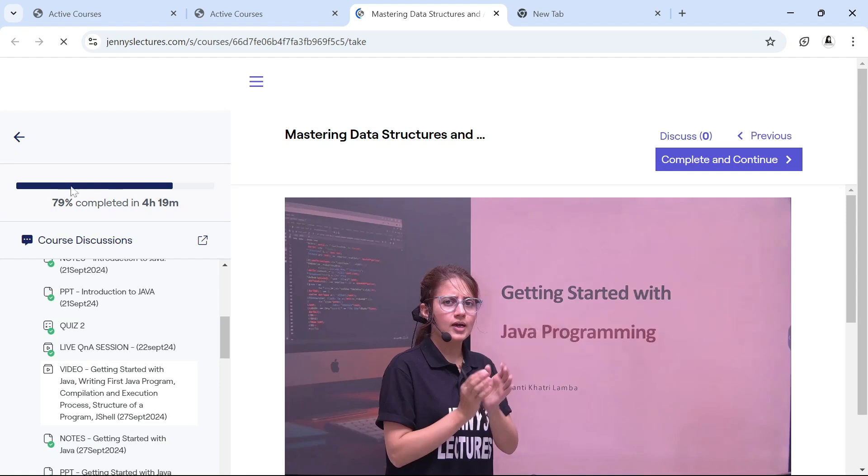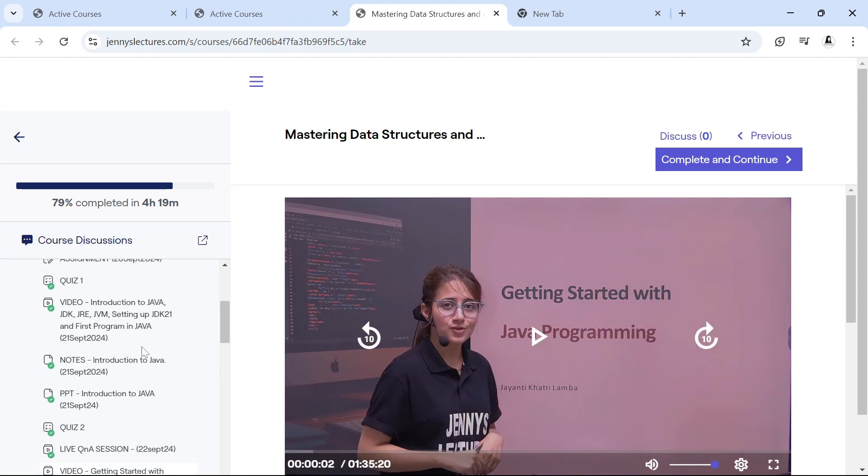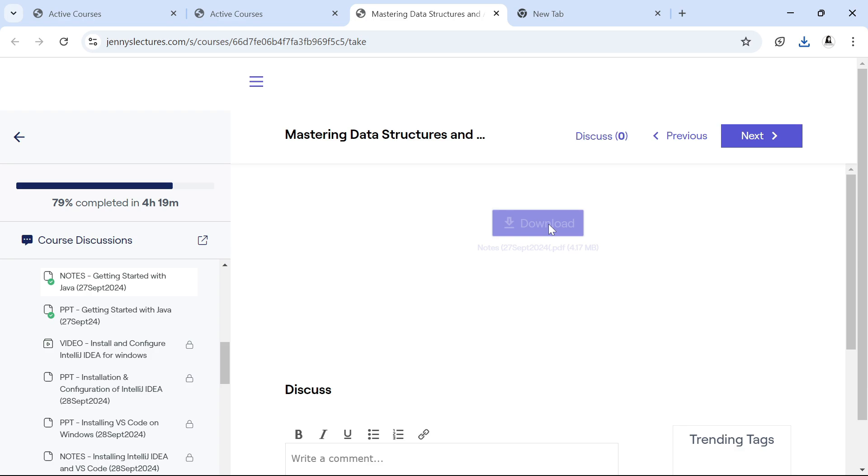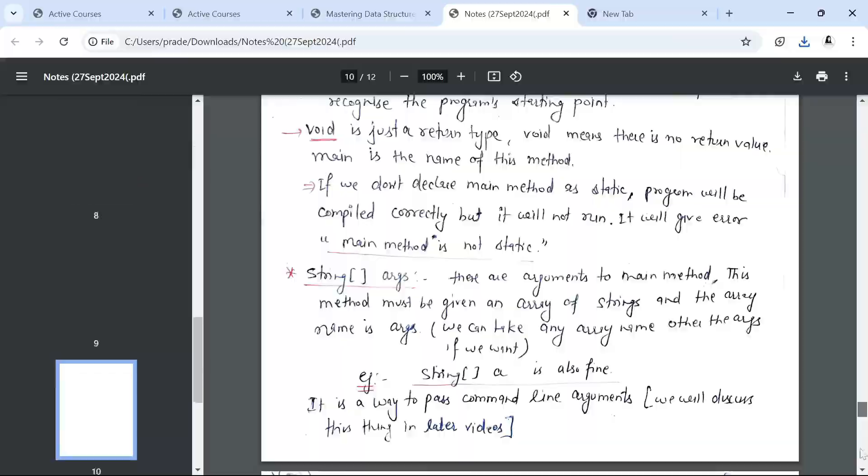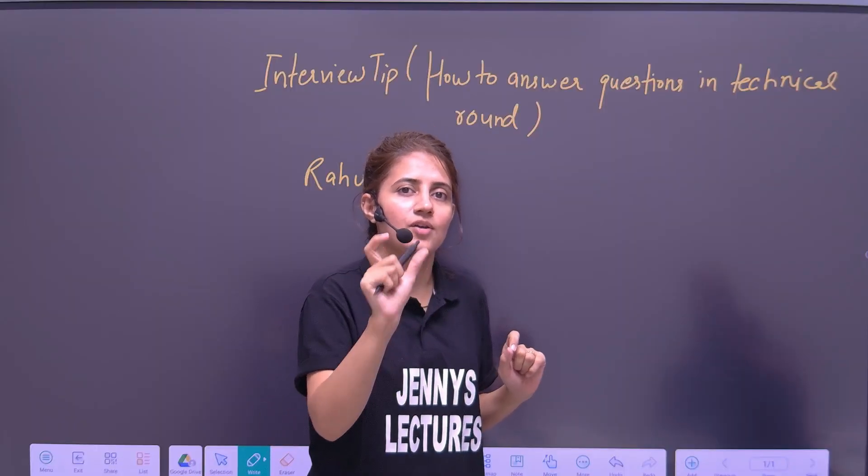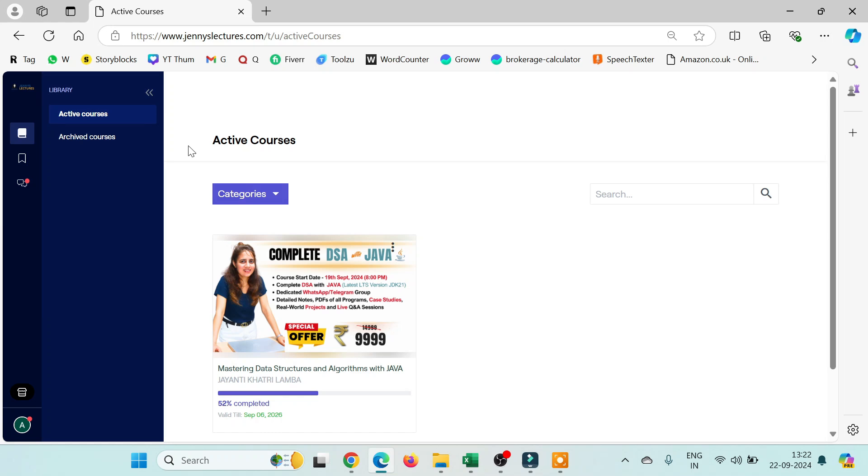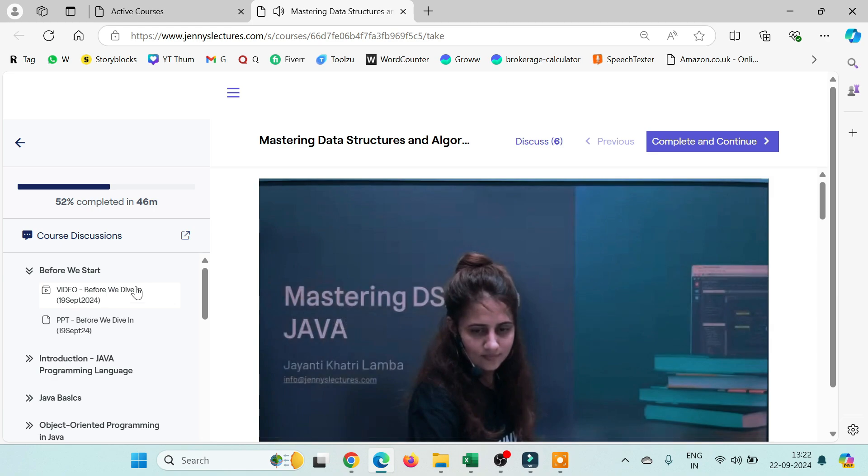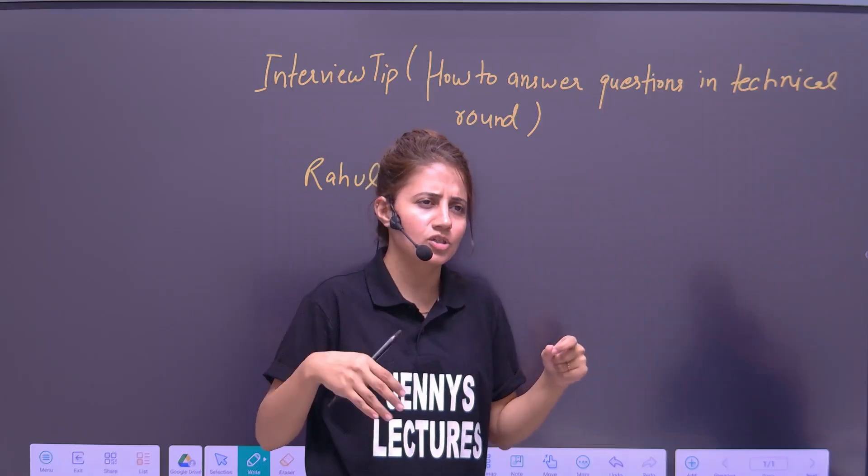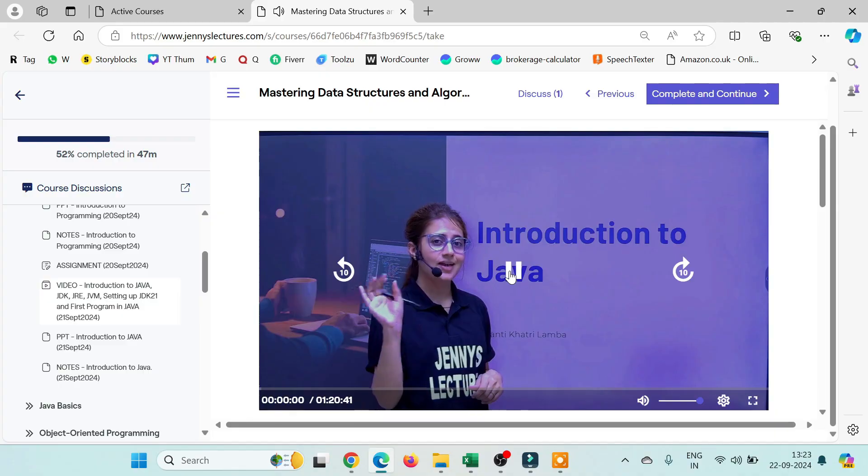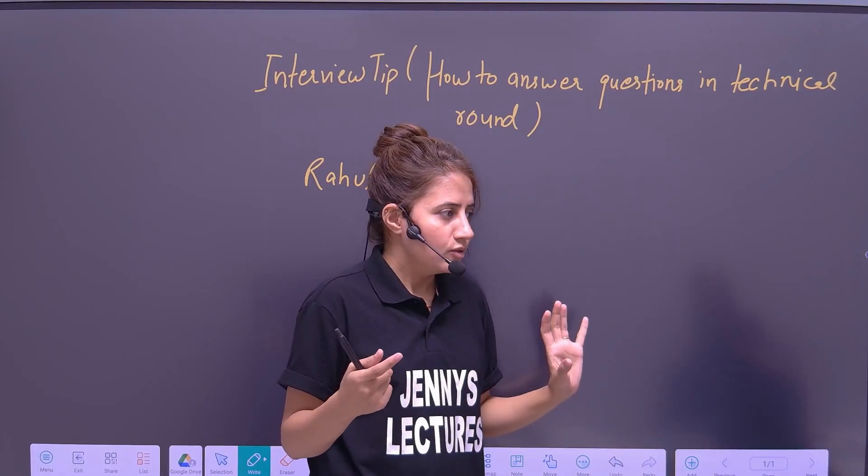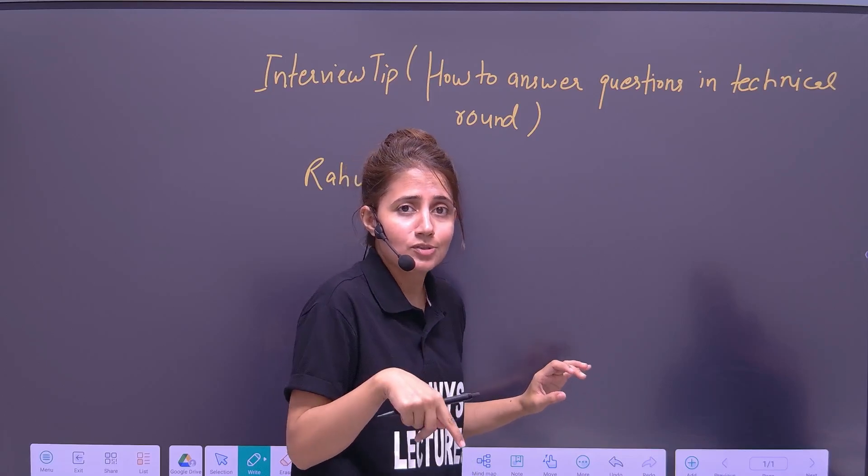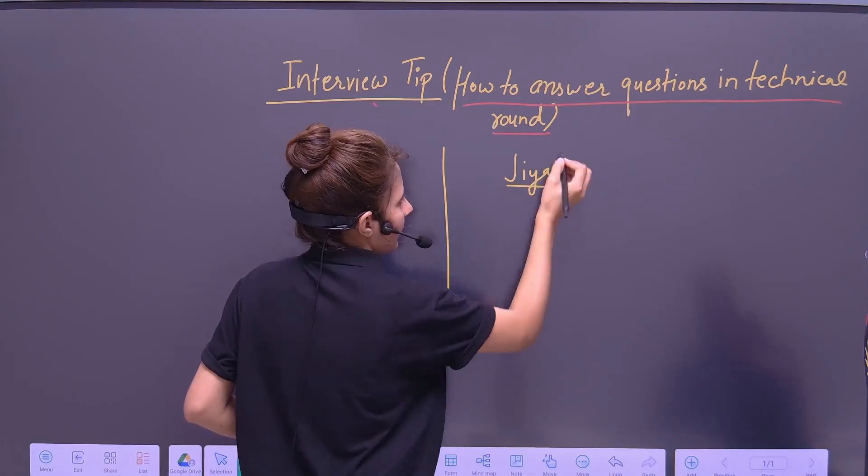But before that, let me just remind you, I have launched a new course, Mastering Data Structure and Algorithm with Java. That has already been started from 19th of September, but you can join right now because today is the last day to avail the early bird discount offer. That is extra 10% discount if you use the code best500. The offer is valid for today only. And if you join now, you will get previous lectures also, recorded previous lectures and PPTs, notes, quizzes, assignments, and many more things, projects, case studies we'll be covering in this course. You'll get everything of the previous lectures also. The link is in the description and as well as in the pinned comment.